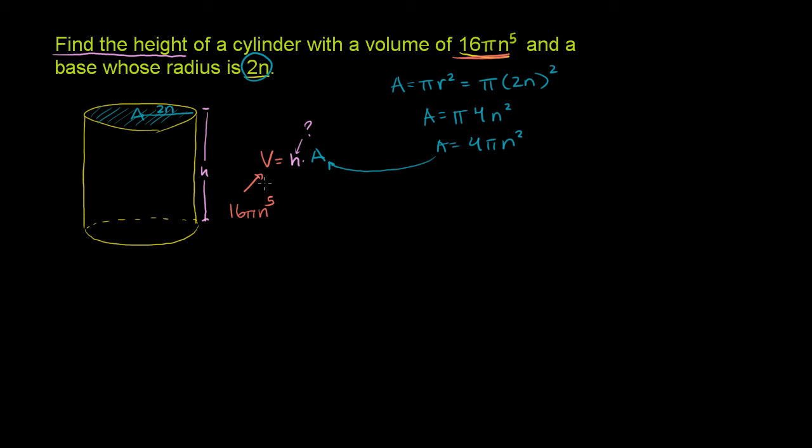Now we can solve for h. We have 16π n to the fifth. That's our volume. That is equal to our height times the area. Times the area of the base, or the top of our cylinder. Times 4π n squared.